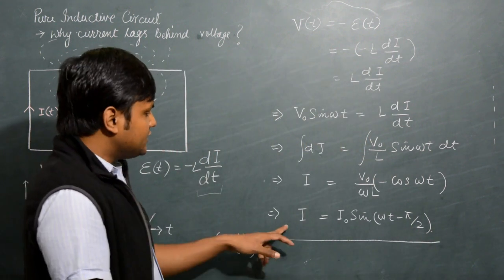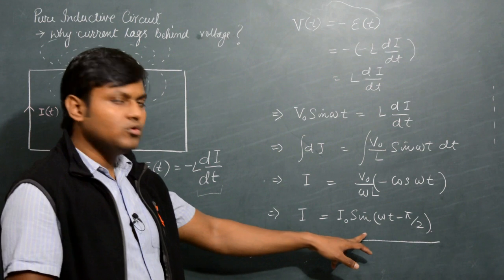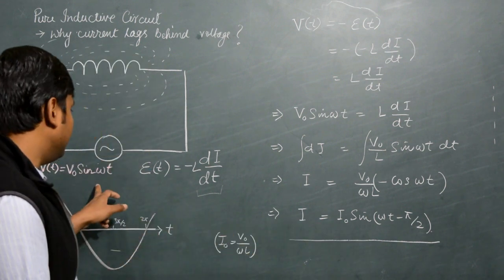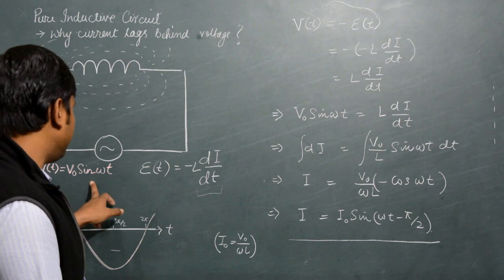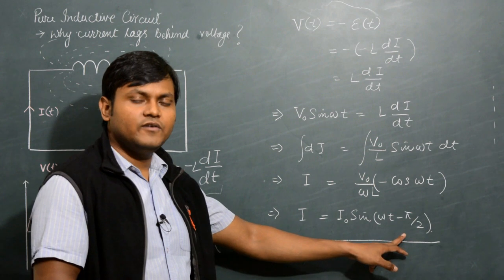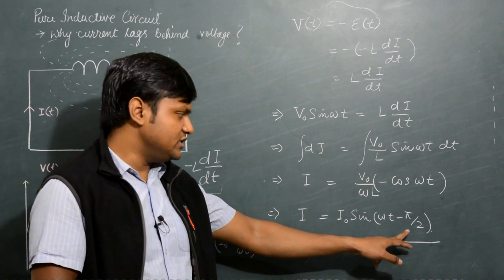As you can see, the current flowing through the inductor also follows a sinusoidal function. But if you compare that with the voltage, there is a phase difference between the voltage frequency and the current frequency, with a phase difference of 90 degrees, which is π/2.